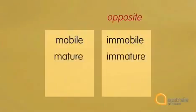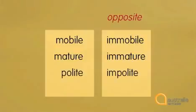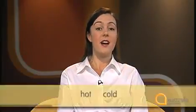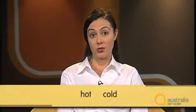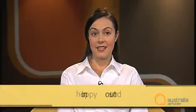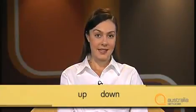So we can have 'mobile' and 'immobile', 'mature' and 'immature', 'polite' and 'impolite', 'patient' and 'impatient'. Knowing the opposites of words is very important. Many words just have a different word that means the opposite, like hot/cold, happy/sad, in/out, up/down. But other words take prefixes that mean 'not', like 'un-', 'di-', 'dis-', 'in-'.